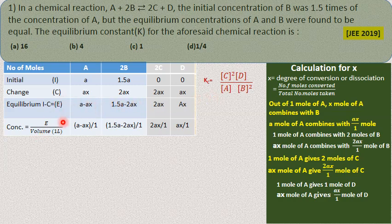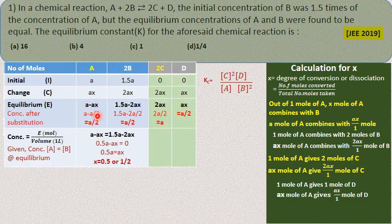Concentration equals moles at equilibrium divided by volume. Since the problem is expressed in terms of initial concentrations with volume taken as 1, concentration equals the number of moles. It is given that concentrations of A and B are equal at equilibrium: A minus Ax equals 1.5A minus 2Ax. On simplification, x equals 0.5 or 1/2.